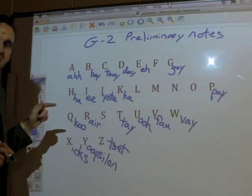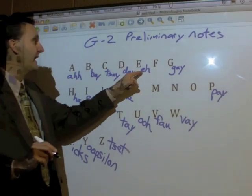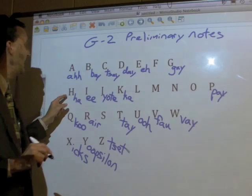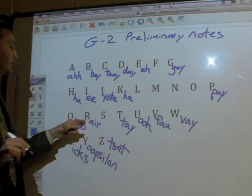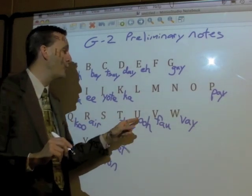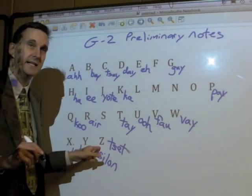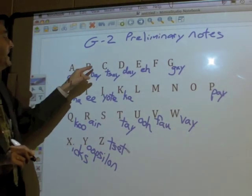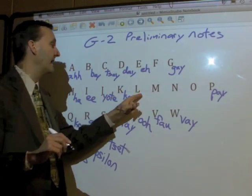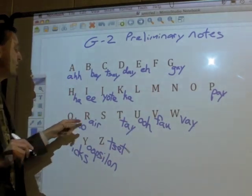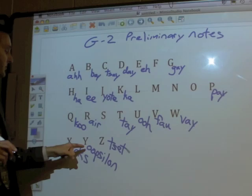Now let's do the whole thing: A, B, C, D, E, F, G. H, I, J, K, L, M, N, O, P. Q, R, S, T, U, V, V. X, Y, Z. Again a little faster: A, B, C, D, E, F, G. H, I, J, K, L, M, N, O, P. Q, R, S, T, U, V, V. X, Y, Z.